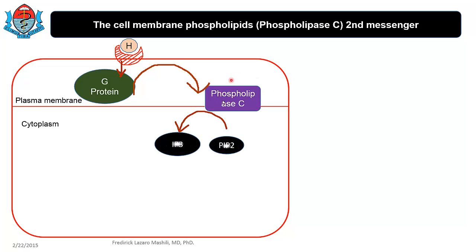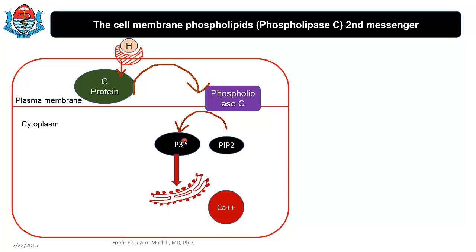Phospholipase C catalyzes the conversion of phosphoinositol diphosphate (PIP2) to inositol triphosphate (IP3). IP3, or inositol triphosphate, is our second messenger. What IP3 does is cause changes in intracellular calcium levels, and once you have increasing calcium levels within the cell, you have a biological response — we will see the example later.